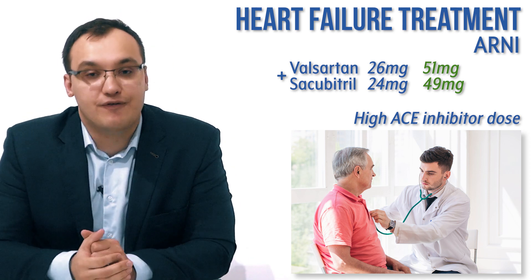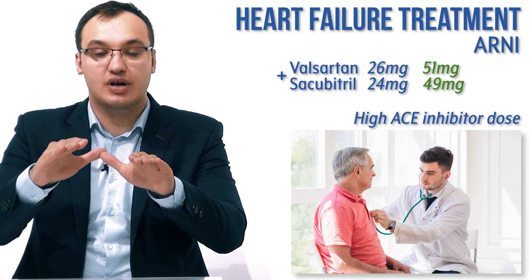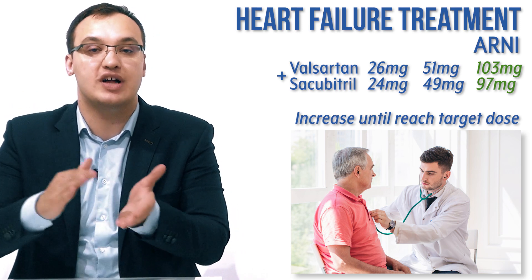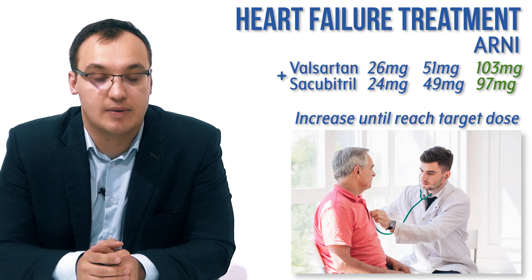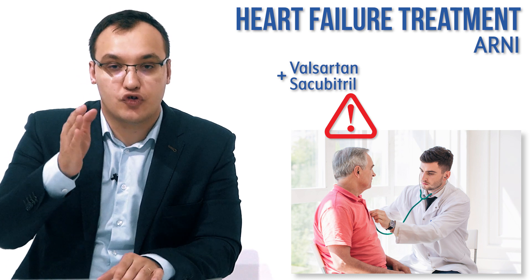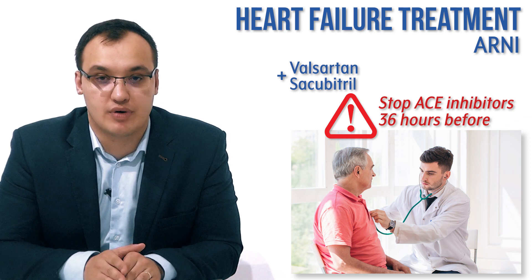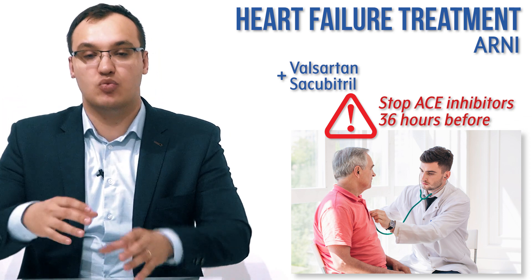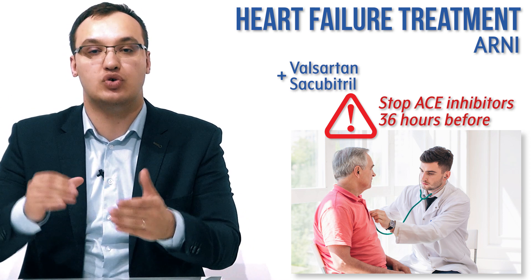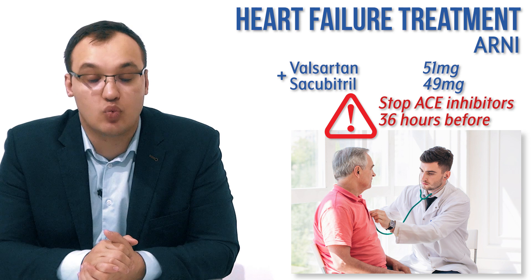Once the patient is on this medication, we need to increase the dose until we reach the target dose, which is the higher dose of 103/97 milligrams. It is very important to remember that before starting sacubitril, you need to stop the ACE inhibitor 36 hours beforehand. So if a patient was on a target dose of ACE inhibitor, we stop it, wait 36 hours — which is one and a half days — and then start at the middle dose of 51/49 milligrams.